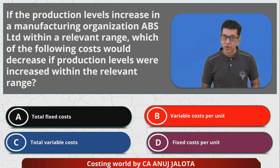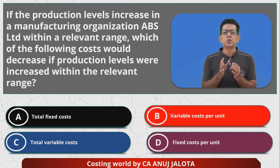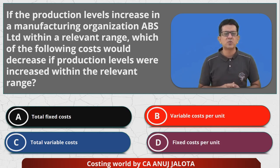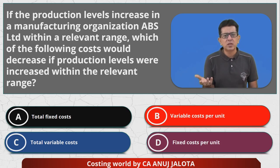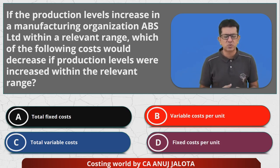I think you all have thought. Now, total fixed cost — if your production level will increase, suppose you had to be producing 10,000 units and you produced 11,000 — your fixed cost will remain the same. They will not be decreasing. Why will rent fall? If you are producing more units, why will salaries fall? Why will depreciation fall? I don't think so.